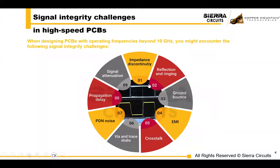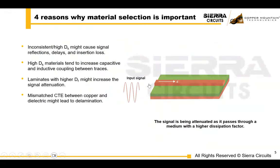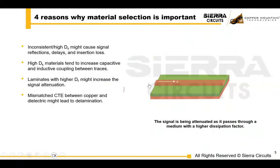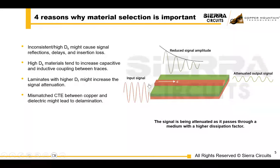So what signal integrity challenges do you have in high-speed PCB designs? When PCBs are operating at frequencies beyond 10 gigahertz, several critical signal integrity challenges arise, such as impedance discontinuities, crosstalk, signal reflection, and even EMI. When the dielectric constant isn't uniform across the board or is too high, it can lead to signal integrity issues.